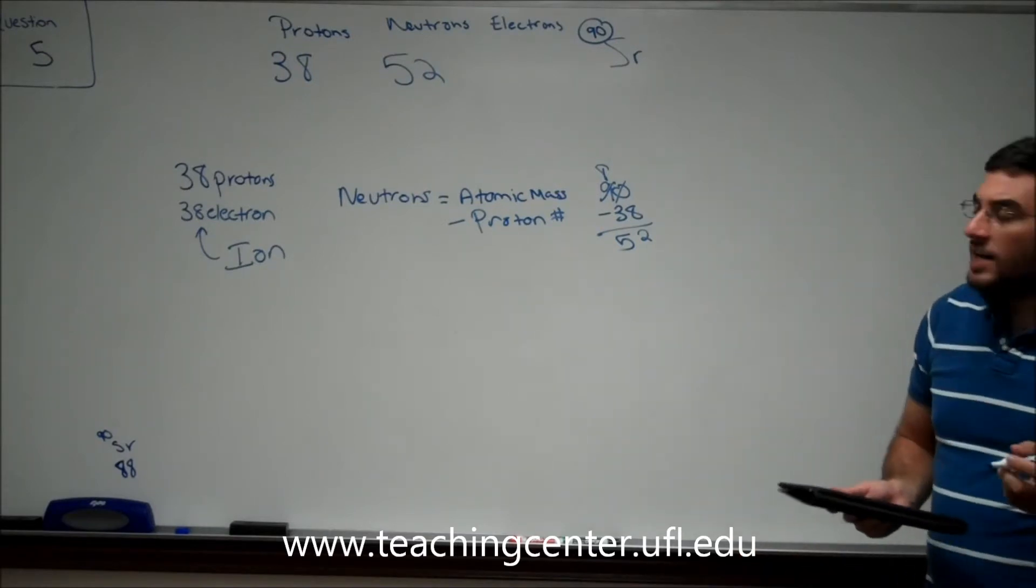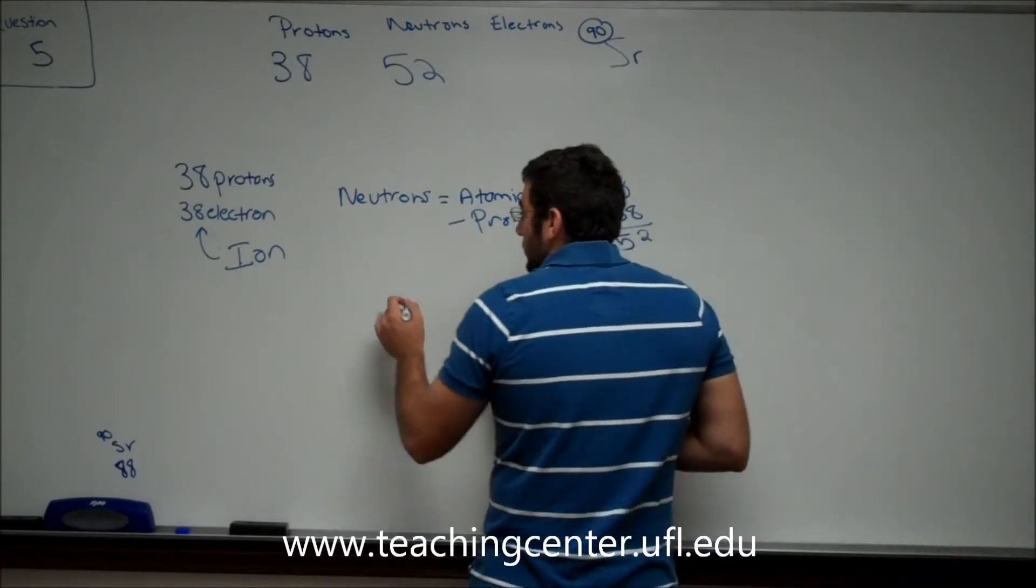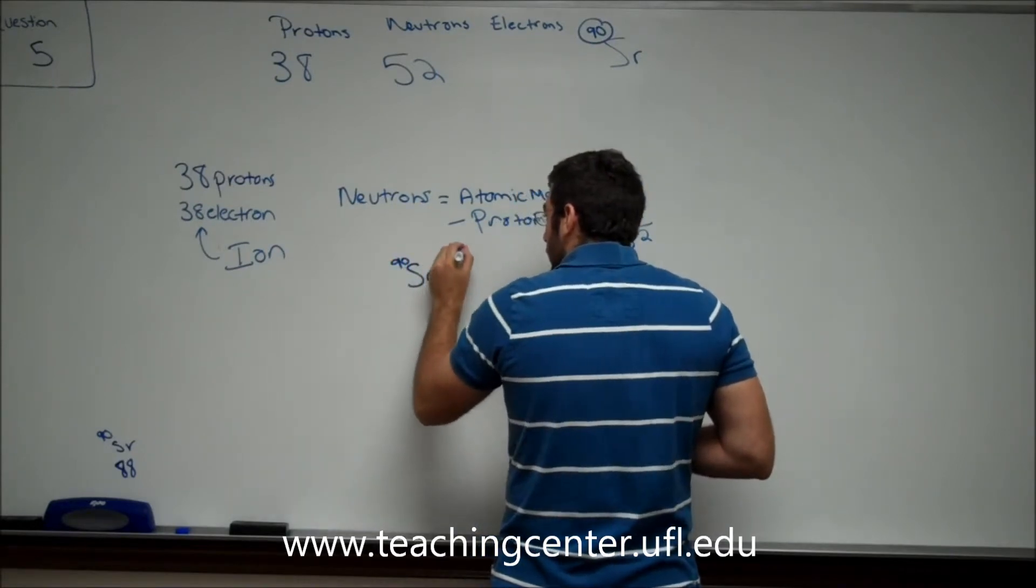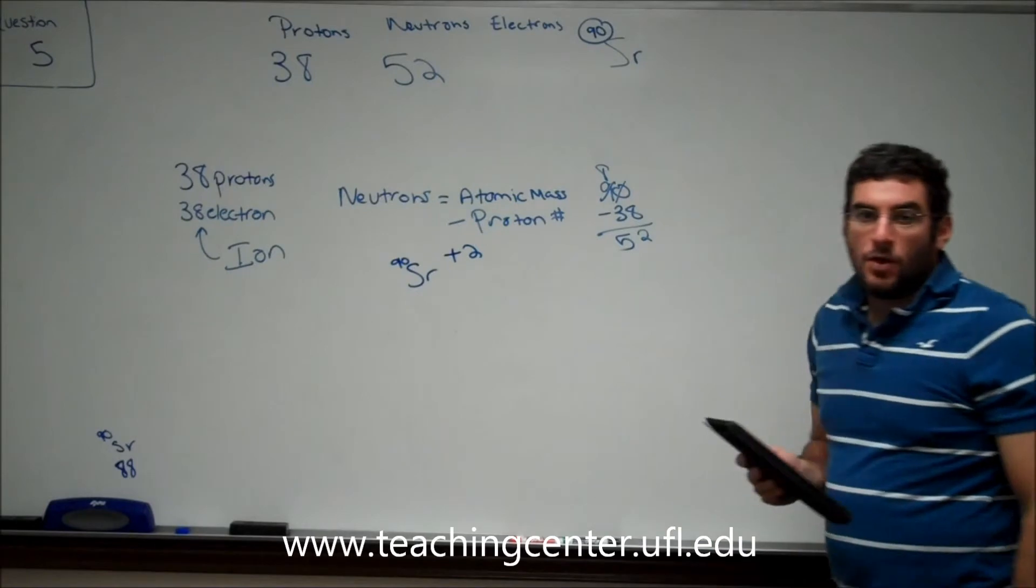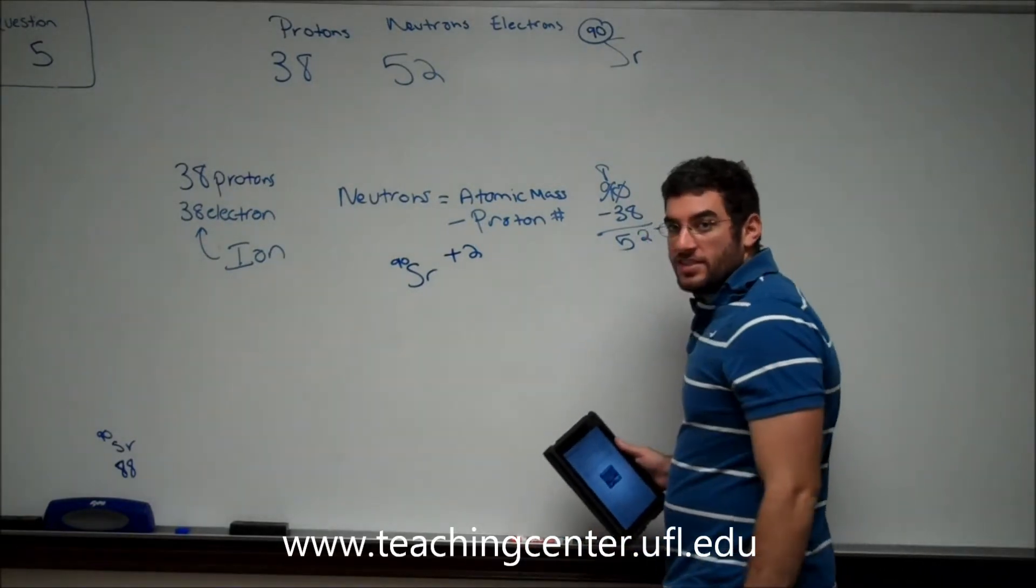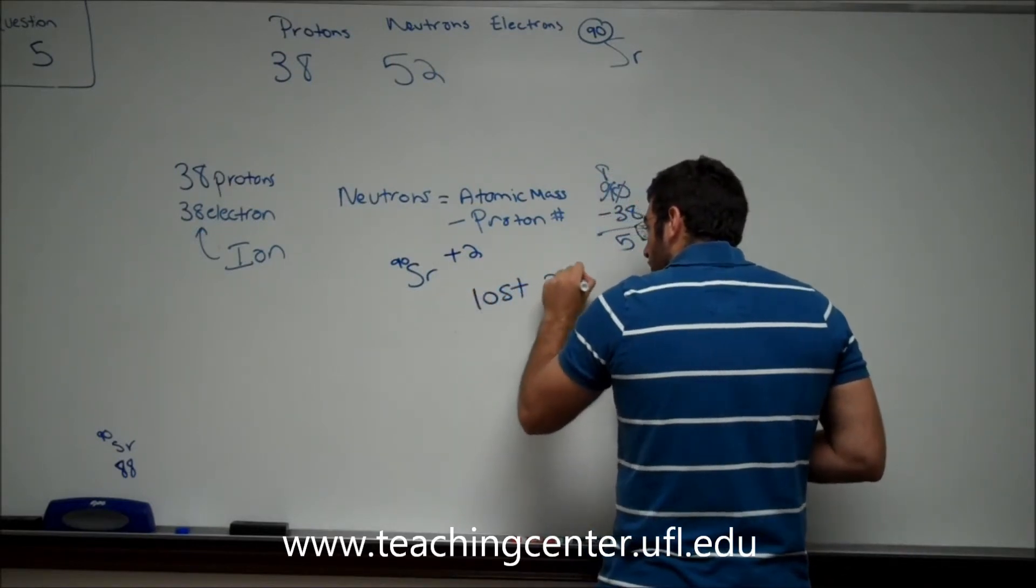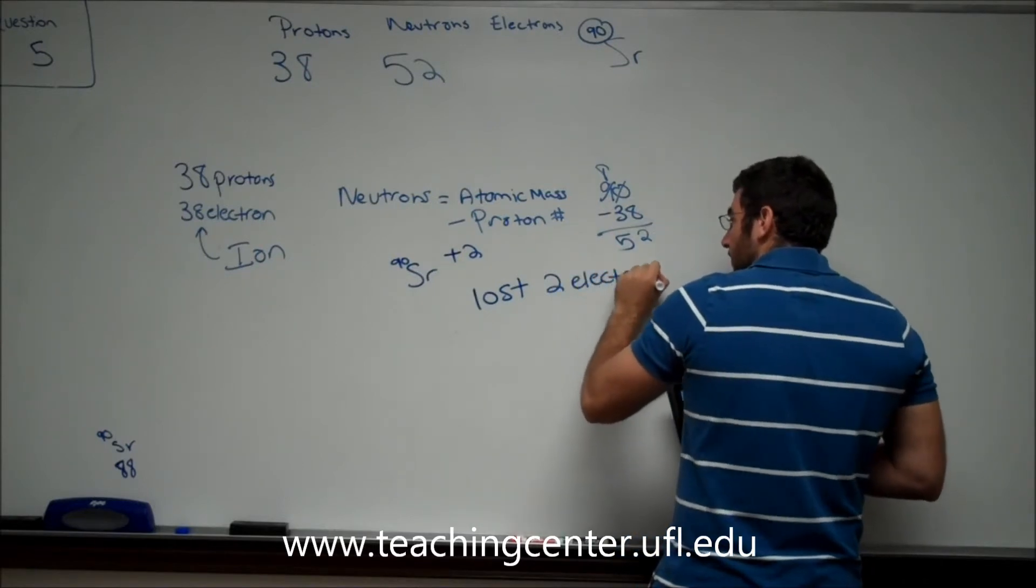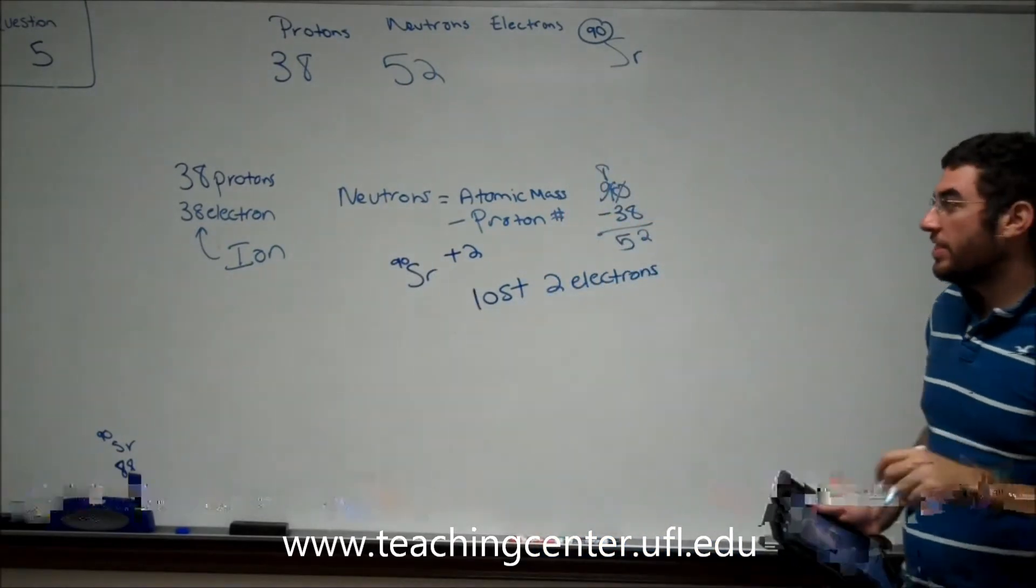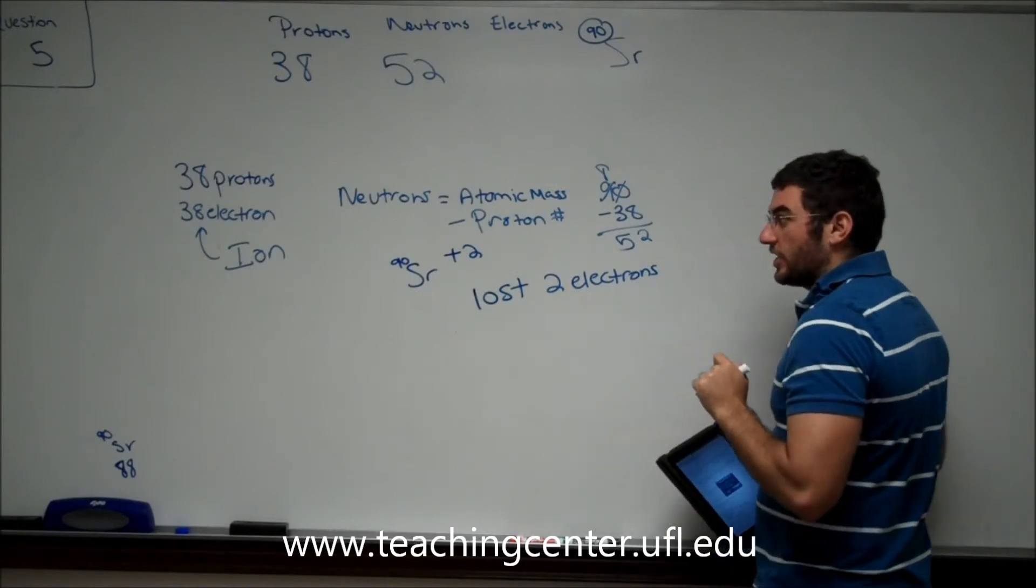Because the electrons are in the alkaline earth metals, we know that strontium-90 has a plus two charge on it. What that means is, if we have a plus two charge, we lost two electrons. So if typically we start out with 38 electrons, but because we undergo radioactive decay, we lose two electrons, that gives us a total of 36 electrons.